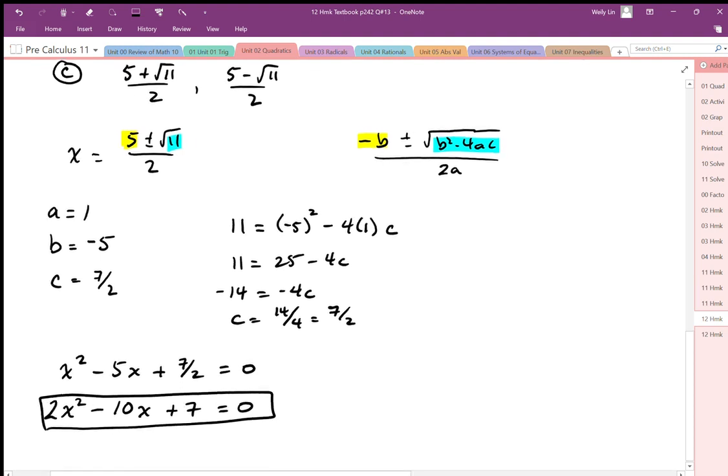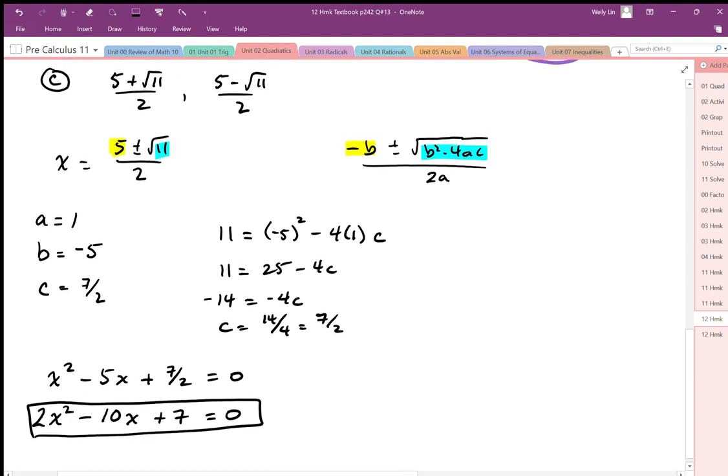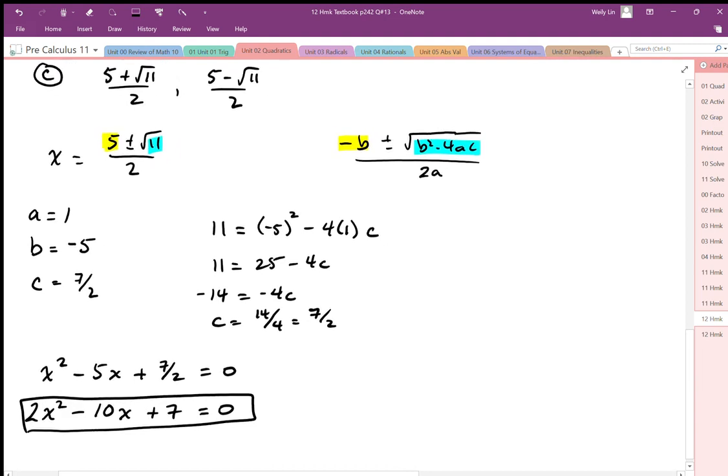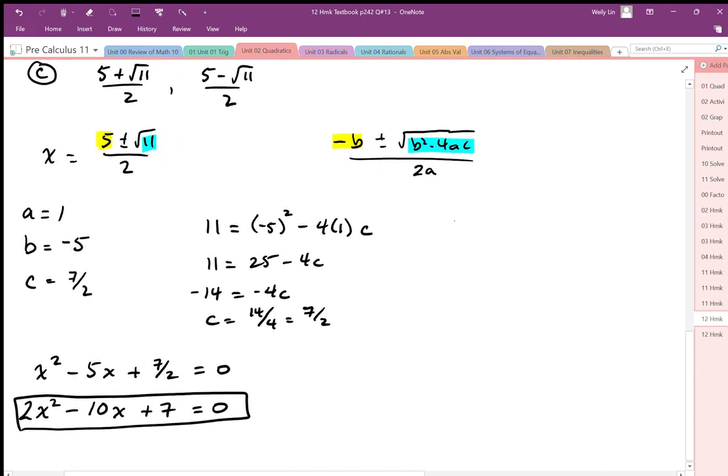So that would be one way, and this strategy is equating the parts of the quadratic formula. The other strategy would just be to, I'm just going to do this in a different color here. So the other strategy is just to write it in its root form. Now this is a little bit more complicated because we have this complex solution.